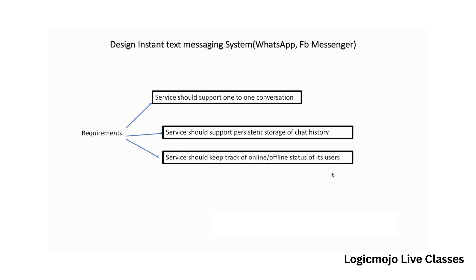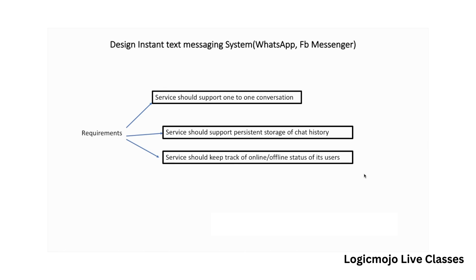My first requirement is that the service should support one-to-one conversation between two different users — it's very flexible to send a message to another user. My second requirement is that the service should support persistent storage of the chat history, so as the user scrolls through their chat history, we should provide immediate results of all the history to that particular user. My third requirement is that the service should keep track of online and offline status of its users, so as soon as a user comes online, all relevant users should immediately get a notification.